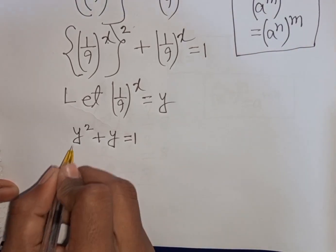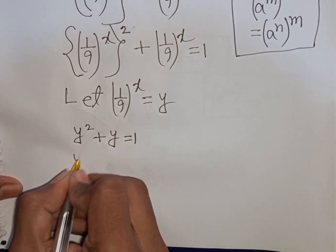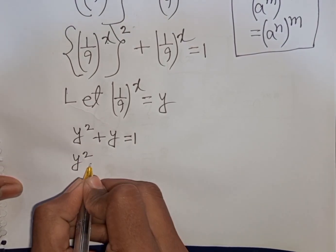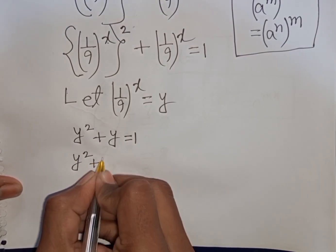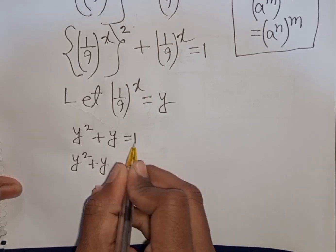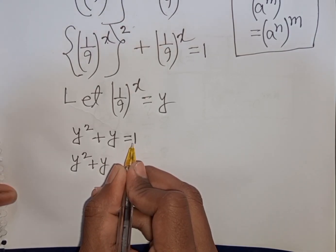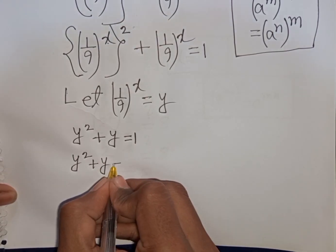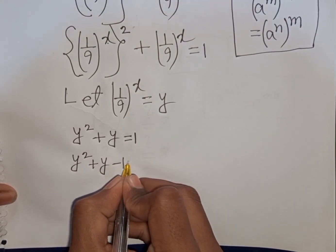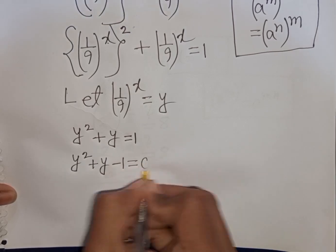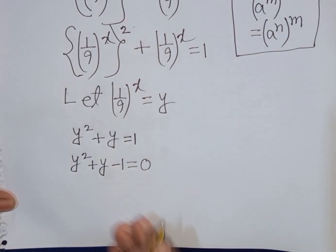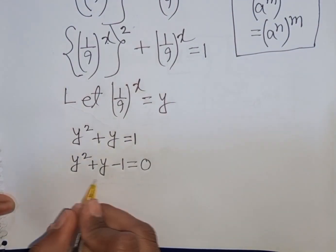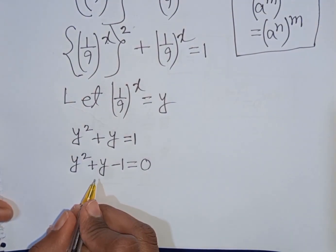Rearranging, we write y² + y, then move 1 to the left side, giving y² + y − 1 = 0. Now we can apply the quadratic formula.